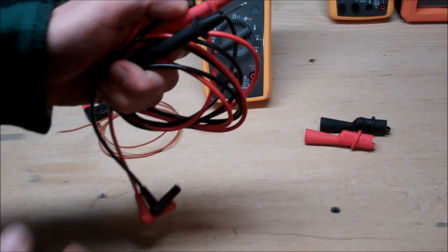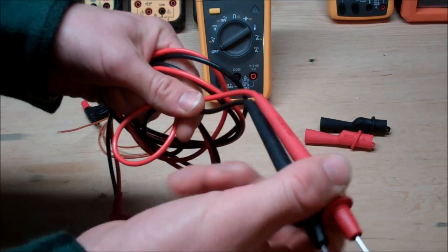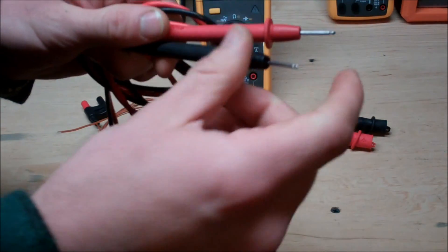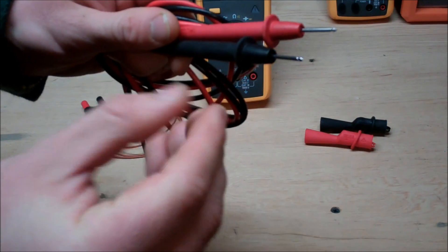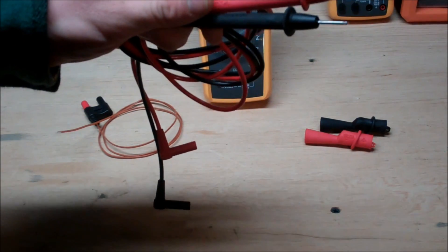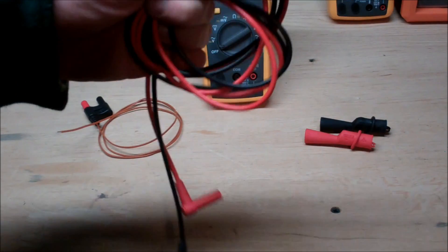Next thing it comes with is the test leads. Now these are really nice, they have good flexibility, you're not fighting the movement of them and they've got really sharp tips. That's awesome when you're trying to take a ground measurement over a car frame or something like that and there's a little bit of oxidization that you've got to pierce.